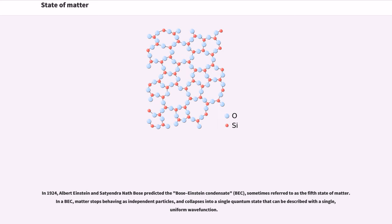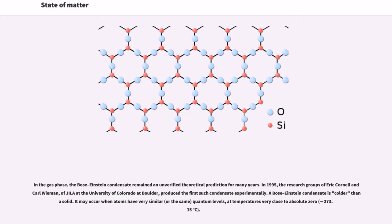In 1924, Albert Einstein and Satyendra Nath Bose predicted the Bose-Einstein condensate, BEC, sometimes referred to as the fifth state of matter. In a BEC, matter stops behaving as independent particles, and collapses into a single quantum state that can be described with a single, uniform wave function. In the gas phase, the Bose-Einstein condensate remained an unverified theoretical prediction for many years. In 1995, the research groups of Eric Cornell and Carl Wieman, of JILA at the University of Colorado at Boulder, produced the first such condensate experimentally.